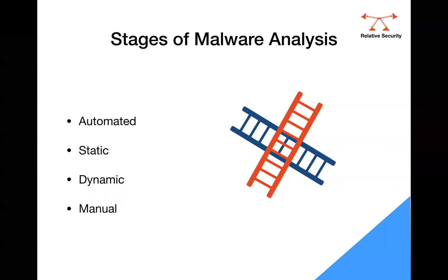In dynamic analysis, you actually run the malicious software in a safe environment. You check what processes are executed, what system changes occur upon running the malware, and whether any internet connections are being made. In summary, you look for registry changes, file system changes, process activity, and network connections being made during dynamic analysis.